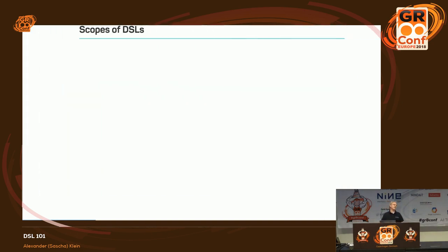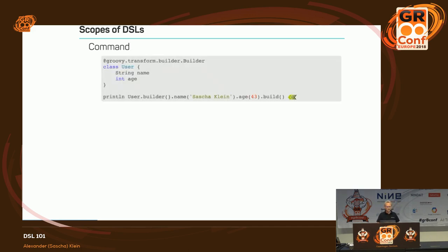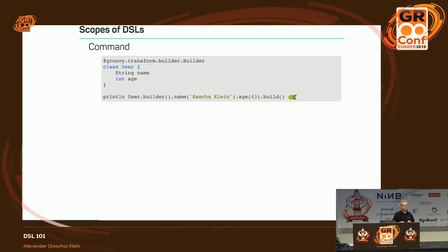So how do we create DSLs? We focus on Groovy and on internal DSLs — external DSLs would be another talk, involving compiler theories. For internal DSLs in Groovy, we have three different scope levels. One is the command level — a DSL that is more like a fluent API. For example, using the @Builder annotation in Groovy, you can create a builder and then chain: name, age, build. This is domain-specific language because it focuses on how to create a user object.